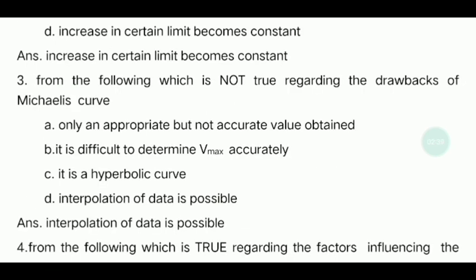Third question: Which of the following is not true regarding the drawbacks of the Michaelis curve? The correct answer is that only an approximate, not accurate, value is obtained. Vmax is difficult to determine accurately; the curve is hyperbolic; and extrapolation of data is not possible — these are all true drawbacks.